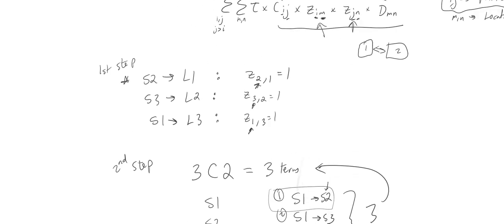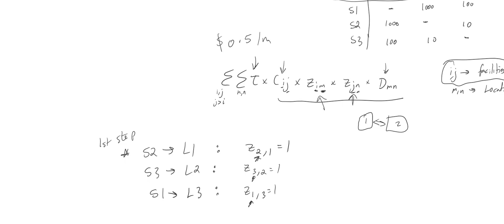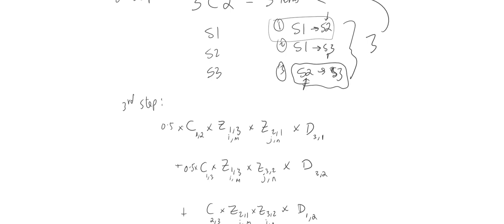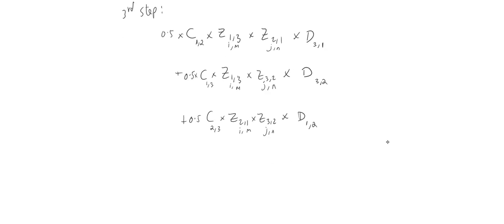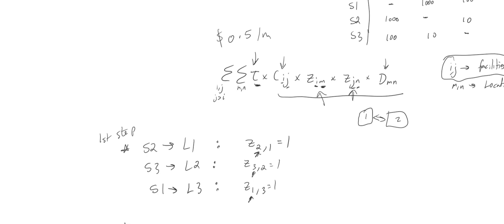We also need tau, the travel cost per meter — that's typically given. We'll assume it's 0.5 dollars per meter. Each term has to be multiplied by 0.5, as specified by the equation. So each term begins with the factor 0.5.